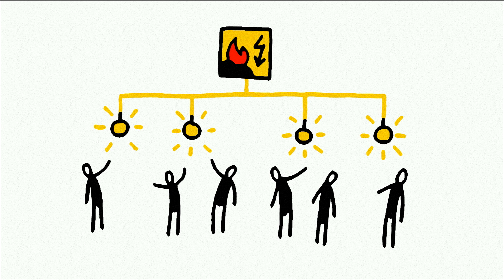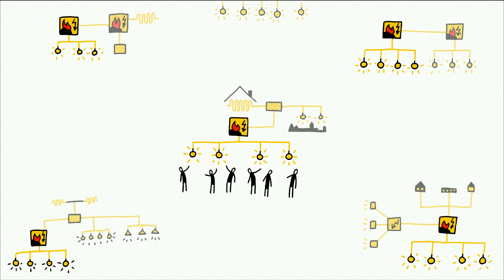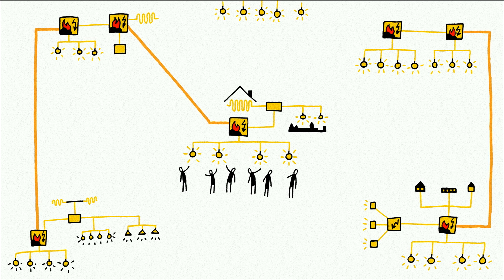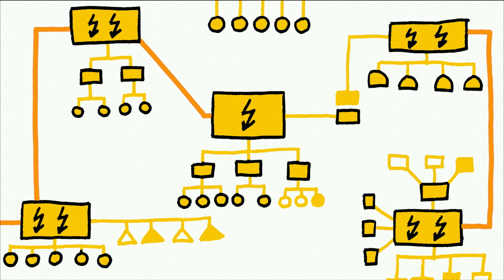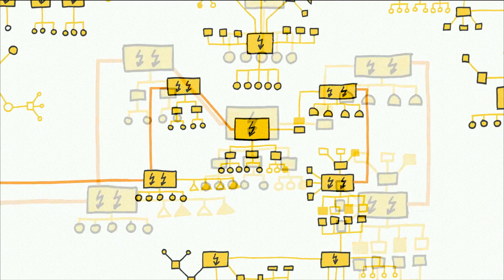Let us take the example of the electricity infrastructure. The first true electricity infrastructure, at a very small scale, came online in 1882. It consisted of a single coal-fired generator providing power to the light bulbs of 59 customers within a New York neighborhood. Soon, similar systems sprouted in other neighborhoods, in other cities and in major cities around the world. Eventually these systems were expanded to link entire urban areas, and isolated grids were linked to provide backup power and improve stability.